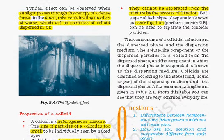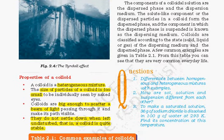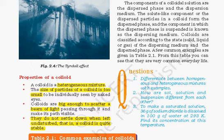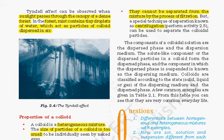Properties of colloids: colloids are a heterogeneous mixture. The size of colloidal particles is too small to be seen by the naked eye, but big enough to scatter a beam of light. They do not settle down when left undisturbed, so colloids are quite stable. They cannot be separated from the mixture by the process of filtration, but can be separated by a process called centrifugation.